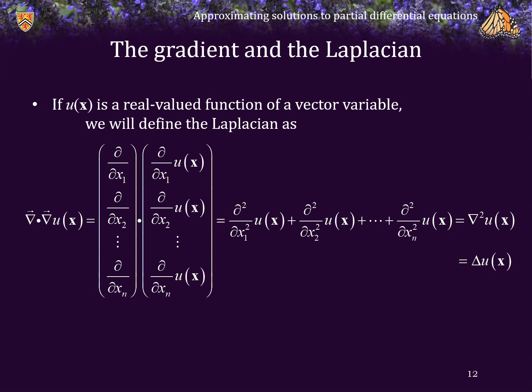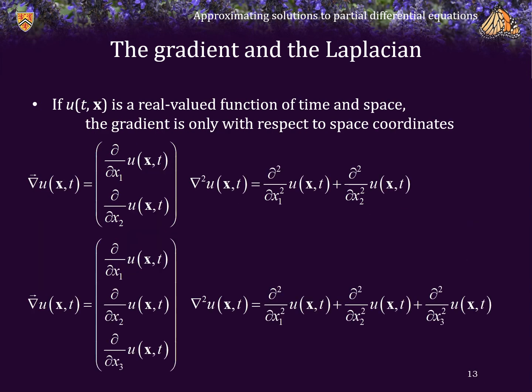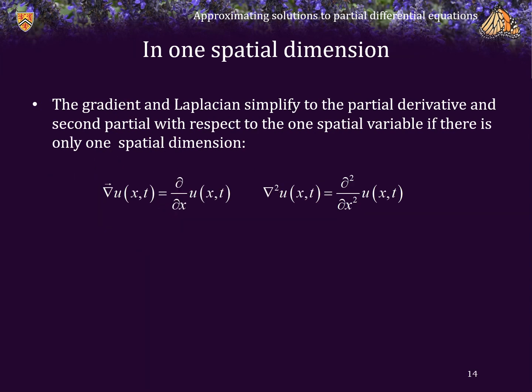This is sometimes denoted as the upward-pointing triangle applied to u; however in this course we will use the notation of the gradient operator squared. If u is a function of both t and a vector variable x, then the gradient and the Laplacian will only be defined with respect to the spatial coordinates. As a simplification note: the gradient and the Laplacian reduce to the ordinary partial derivative and the second partial with respect to that one spatial variable when there is only one spatial dimension.